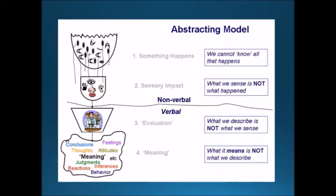Something happens outside of you; it sends information in the form of light waves, sound waves. This hits your senses — that's step two, sensory impact. Your eyeballs receive the light, sound bounces your eardrums, you feel, smell, taste, touch. This is the first level of abstraction.